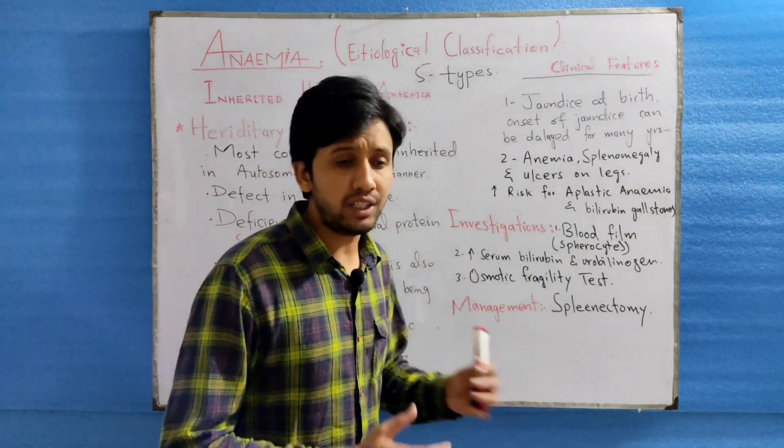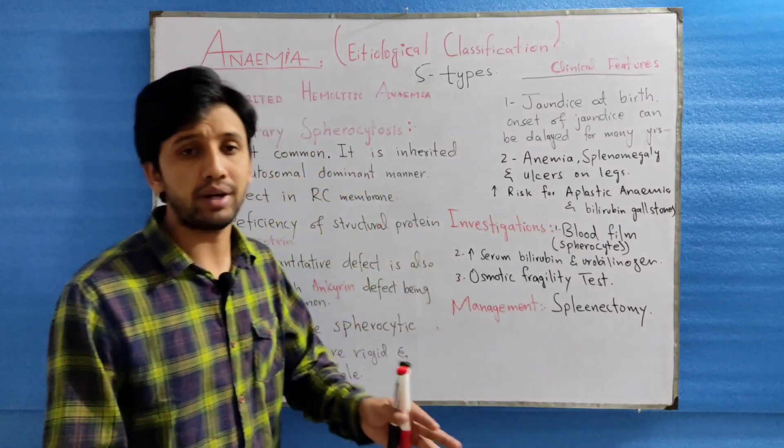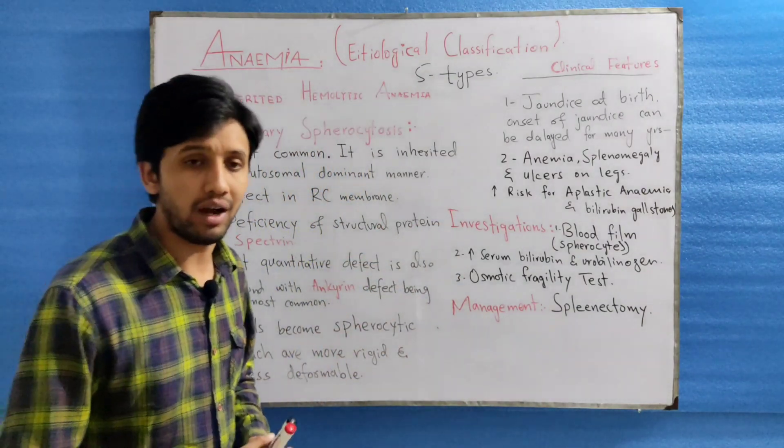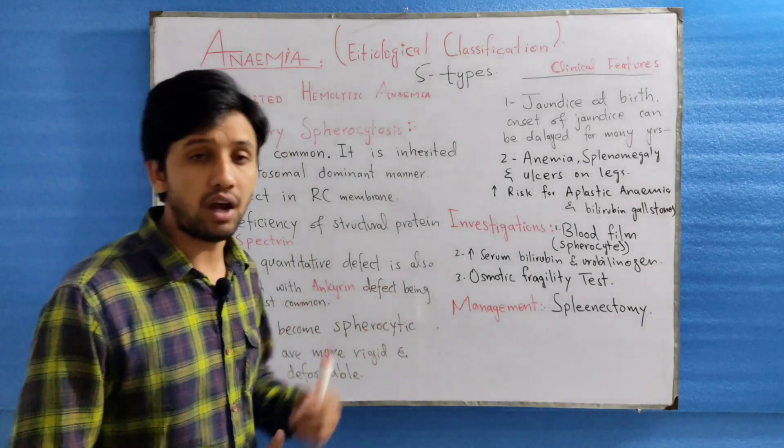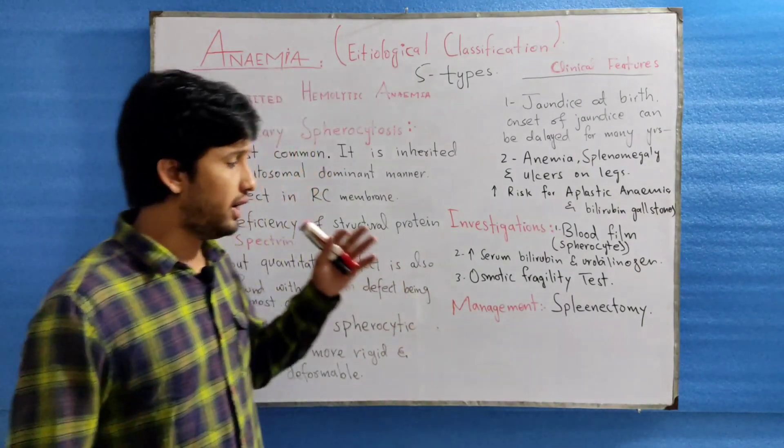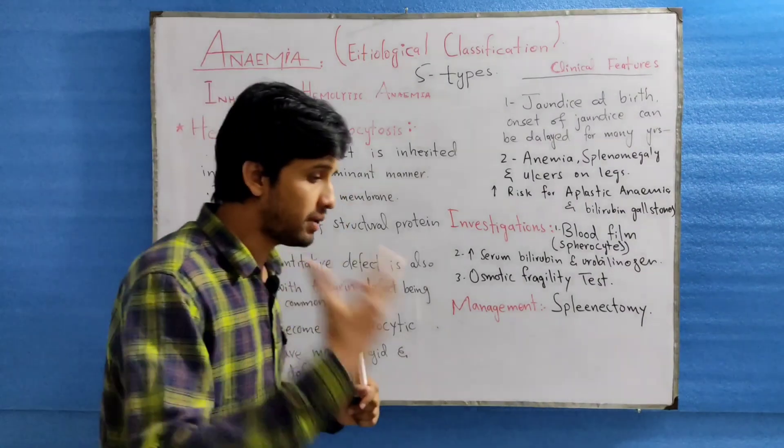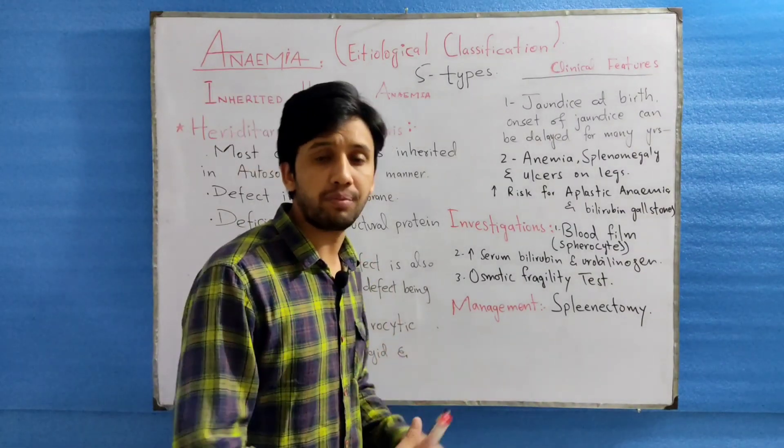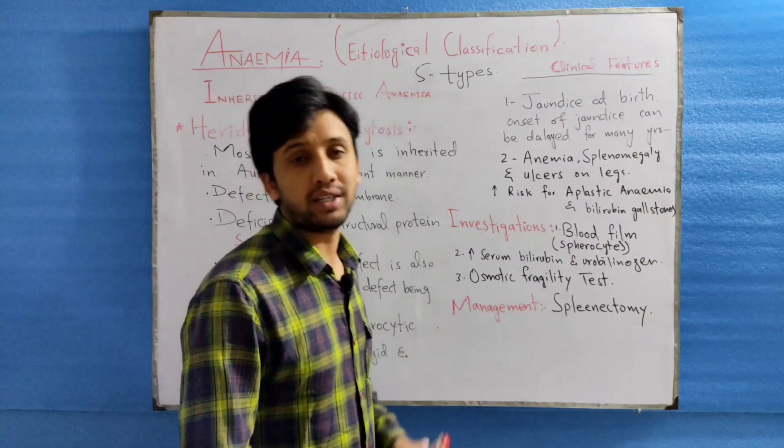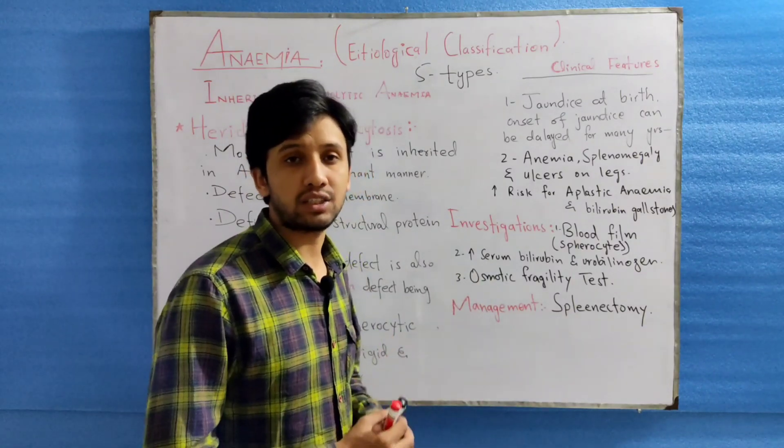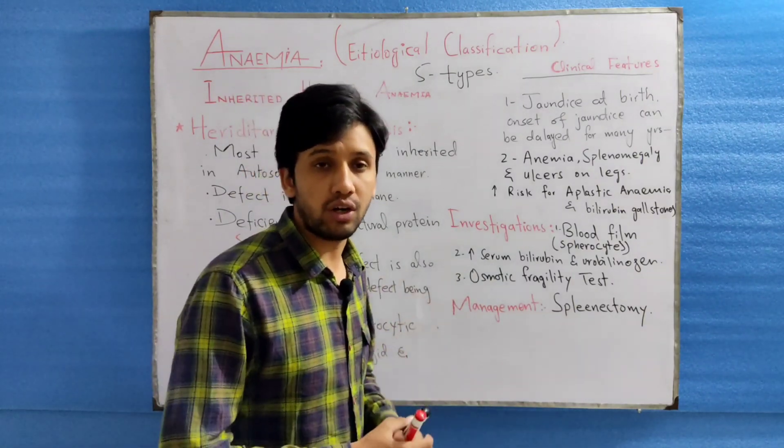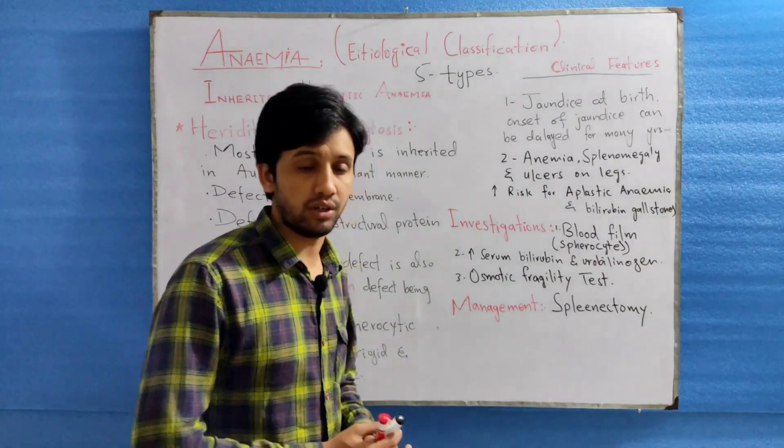This hereditary spherocytosis is the most common inherited hemolytic anemia and it is inherited in an autosomal dominant manner. In most cases it is autosomal dominant, while in some cases in 25% of the patients, neither parent is affected and it is presumed that HS is caused by some auto-mutation or it is totally recessive disorder.